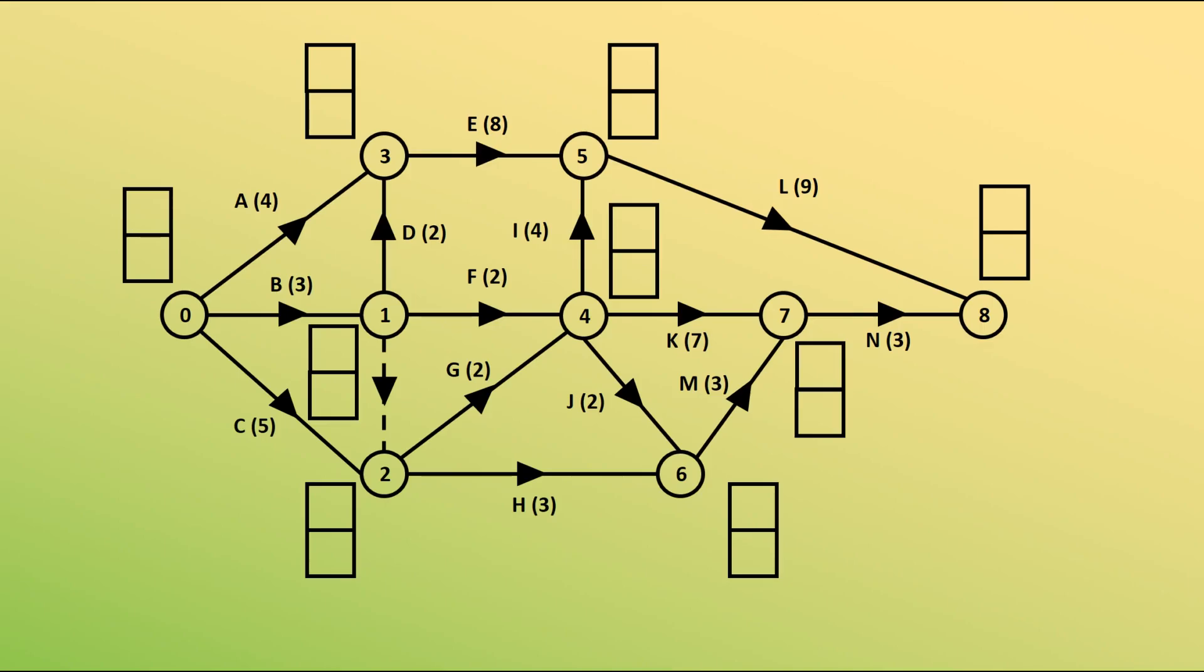In this diagram I've represented the activities using these edges. The arrows show which direction the activity proceeds in. The nodes or vertices are representing the events, moments in time when activities that feed into that moment have been completed. In each of the boxes next to the nodes we are going to be representing the earliest time we can be at that event and the latest time we can be at that event.